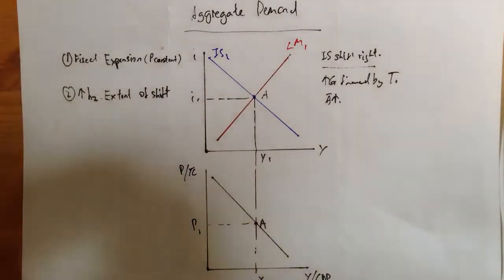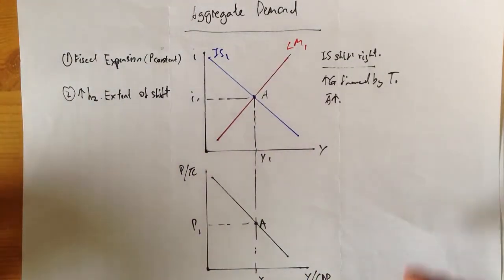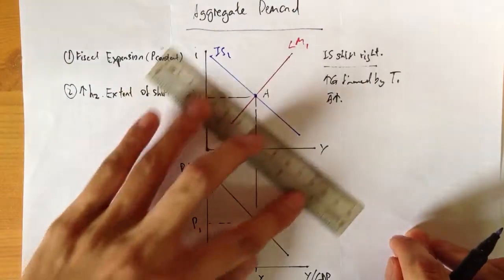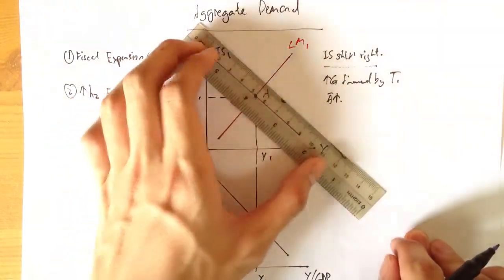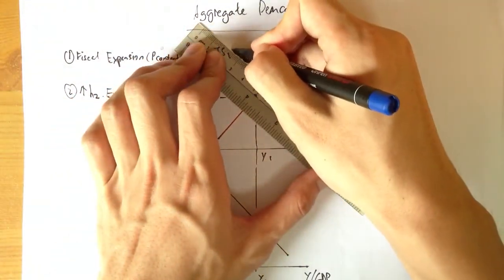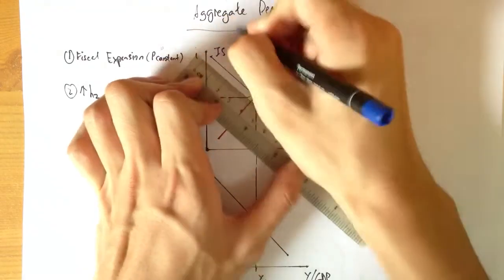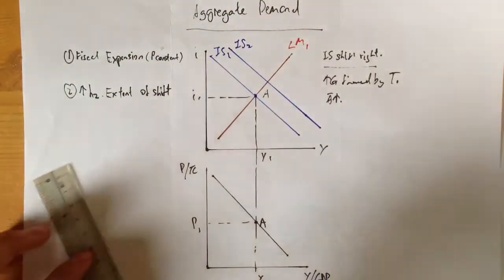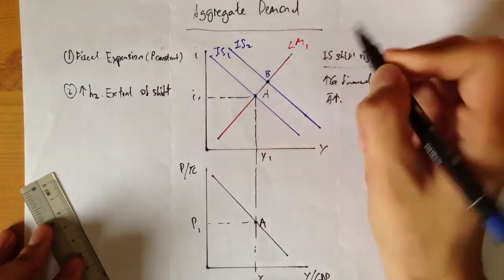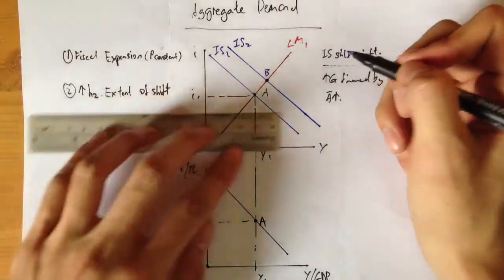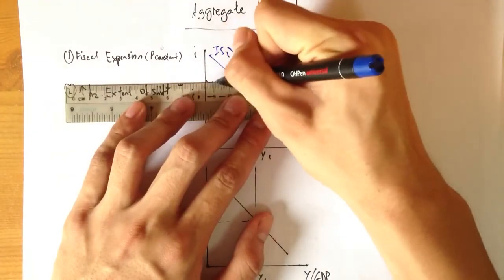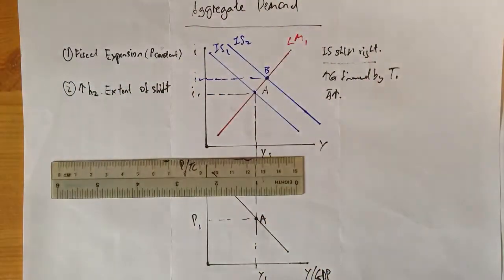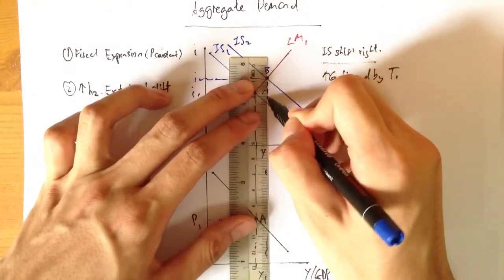We're going to use blue in case you guys can't see it. An increase in IS. You have a new equilibrium point. Here you experience an increase in interest rate and an increase in output.